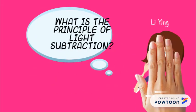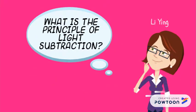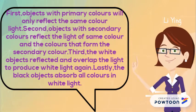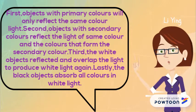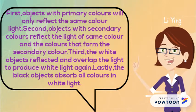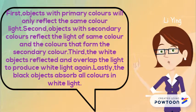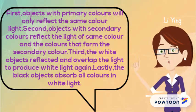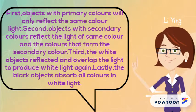What is the principle of light subtraction? First, objects with primary colors will only reflect the same color light. Second, objects with secondary colors reflect the light of the same color and the colors that form the secondary colors. Third, white objects reflect and overlap the light to produce white light again. And lastly, black objects absorb all colors in white light.